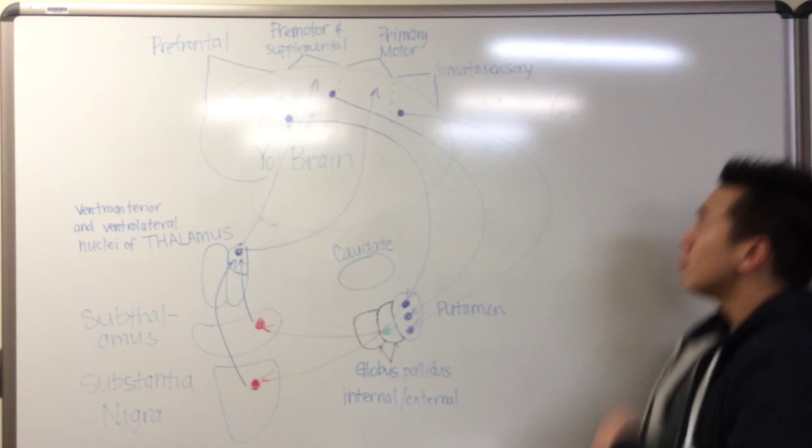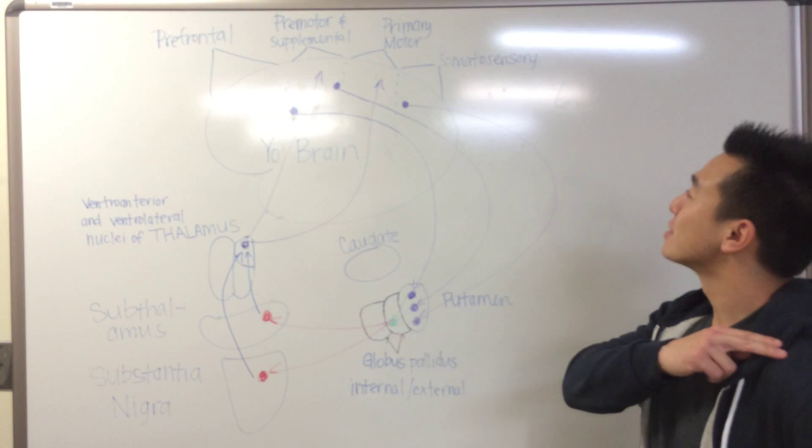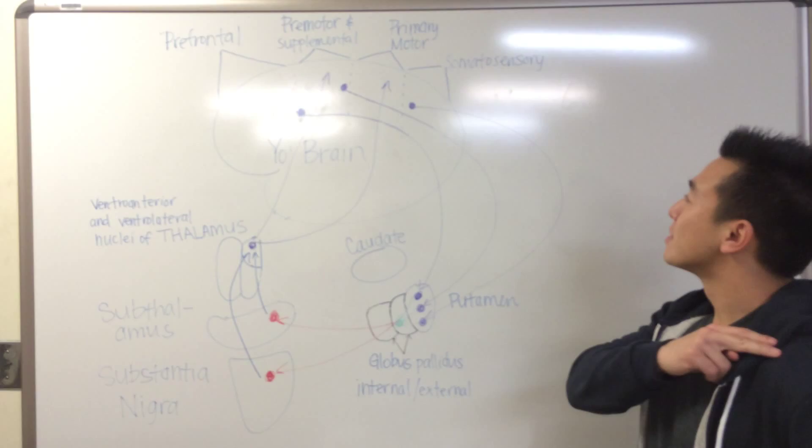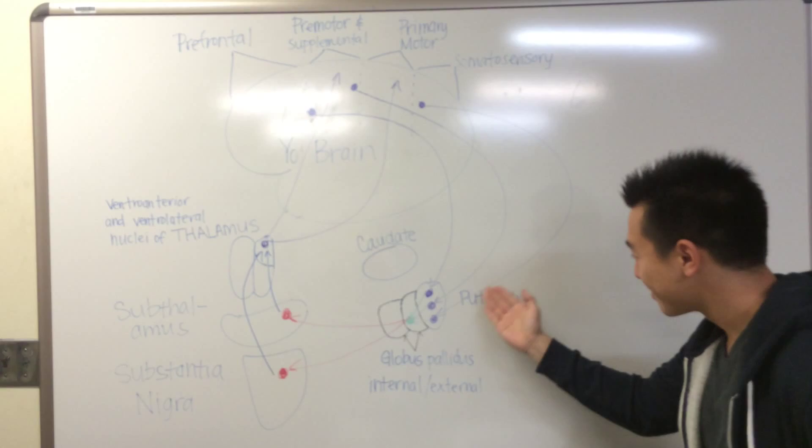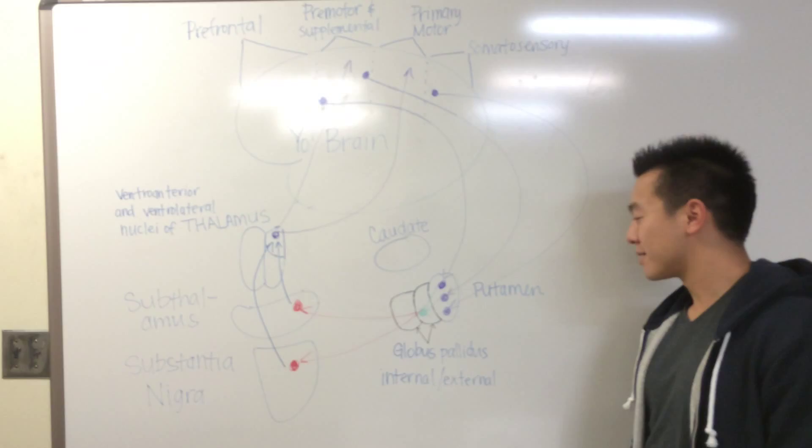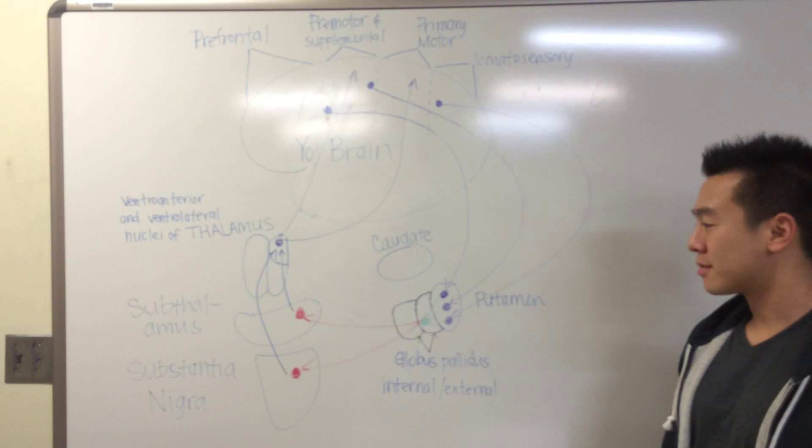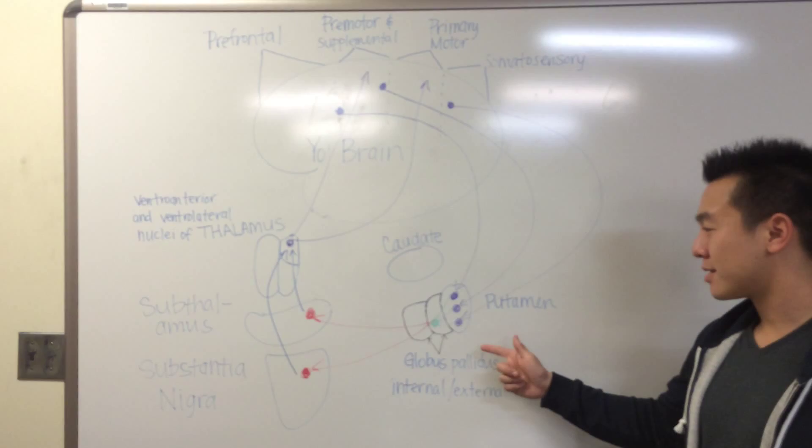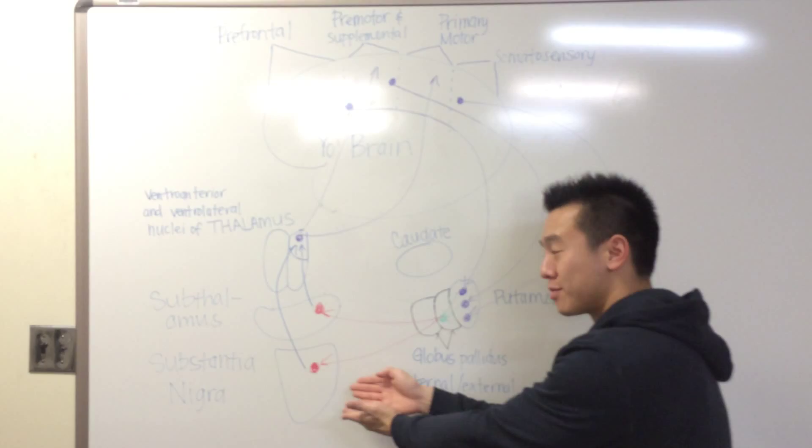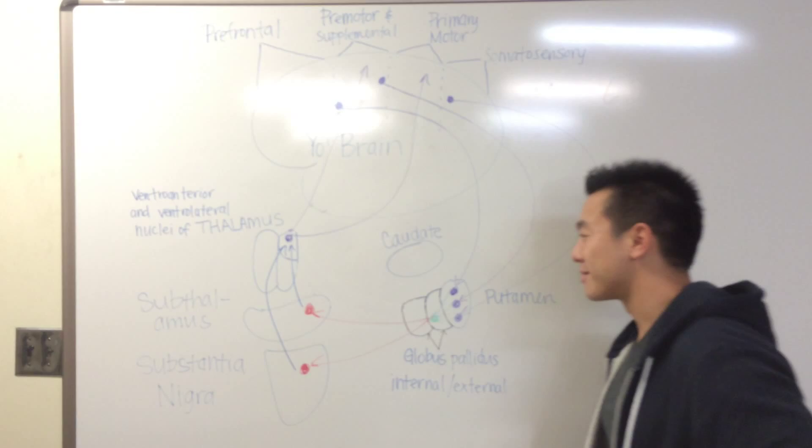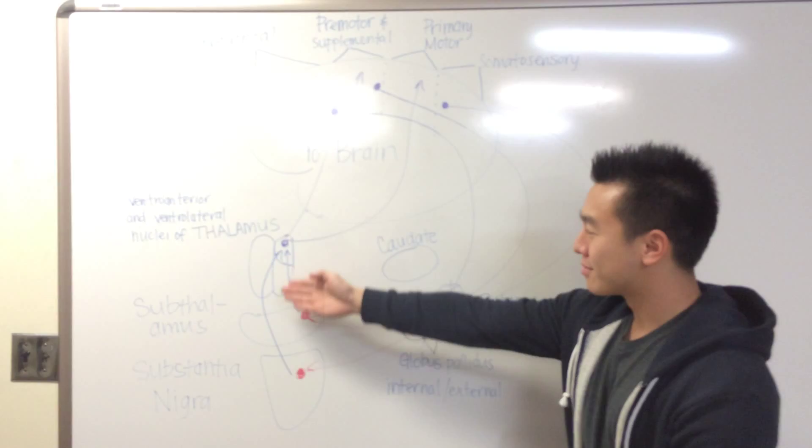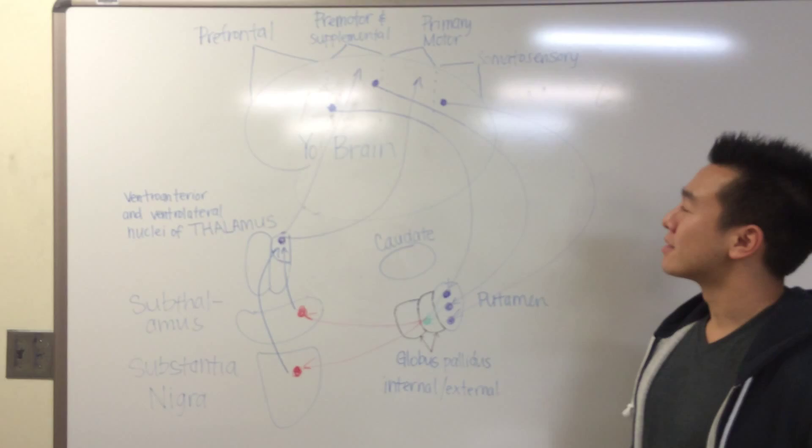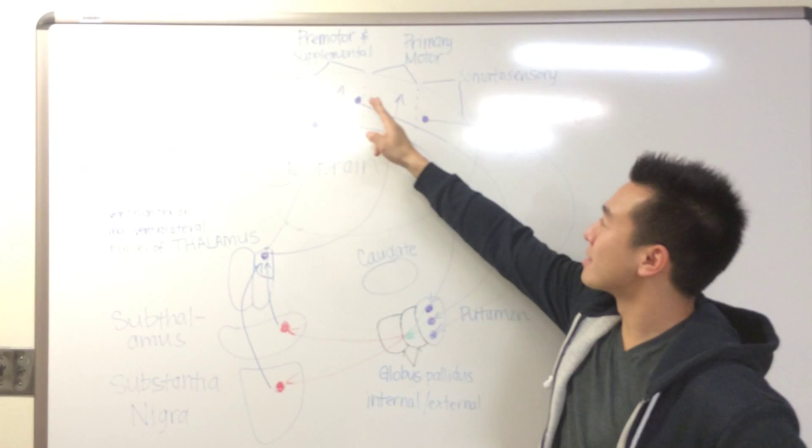And now Jason will be showing the ancillary putamen circuit. From the premotor, supplemental motor, and somatosensory cortex, we have purple arrows going towards the putamen. Then from the putamen we have it going to the external globus pallidus which is right next to the putamen demonstrated in green arrows. From the external globus pallidus we have it going to the substantia nigra and the subthalamus demonstrated in red arrows. From the substantia nigra and the subthalamus we have it going to the thalamus demonstrated in blue arrows. From the thalamus we have it going back to the premotor and supplemental and the primary motor demonstrated again in purple arrows.